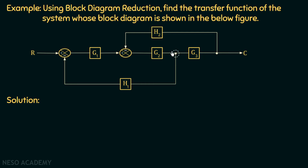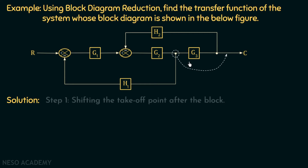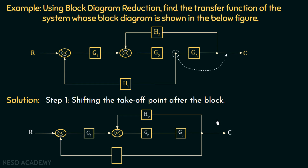Observe this takeoff point. If we shift this takeoff point after this block, then these two blocks will come in series and we can multiply the gains of these blocks. So step number 1 is shifting of this takeoff point after this block. If we shift this takeoff point after this block, the block diagram representation will look like this — we have shifted the takeoff point after this block.